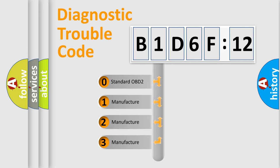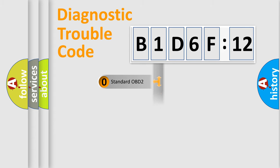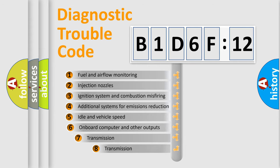If the second character is expressed as zero, it is a standardized error. In the case of numbers 1, 2, 3, it is a more precise expression of the car-specific error.